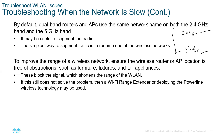If you rename the SSIDs and give them different names, it becomes easy to split traffic. To improve range, ensure the router or AP location is free of obstructions — especially when using the 5 GHz band, which can easily be obstructed. Although it provides faster speeds, it can easily be interfered with by furniture, appliances, and walls, which blocks the signal and shortens the range of the wireless LAN. If this still does not solve the problem, a range extender or powerline adapter can be used.